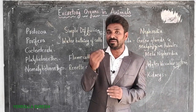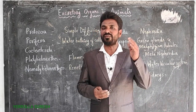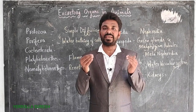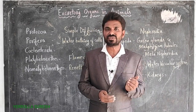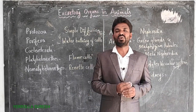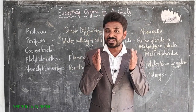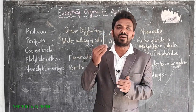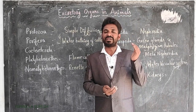So waste materials must be excreted or eliminated regularly, as they are very dangerous to the organism. For the elimination of waste materials, all organisms have developed particular kinds of organs, systems, methods, or cells for the process of excretion. The organ that carries out excretion is called an excretory organ.